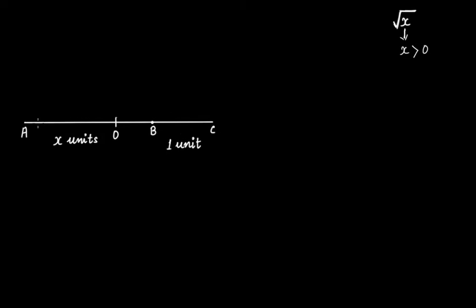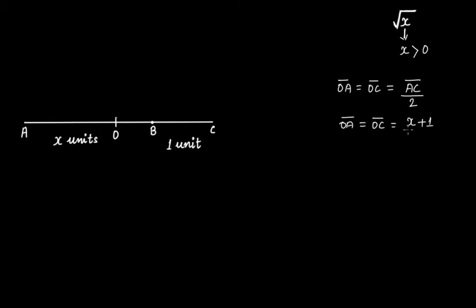Now find out the midpoint of AC and let's say that the midpoint of AC is O. From this we can say that OA = OC = AC/2, because O is the midpoint. So OA and OC will each be equal to (x + 1)/2. AC is AB plus BC, AB is x and BC is 1, so AC = x + 1 units, and therefore OA and OC equal (x + 1)/2.